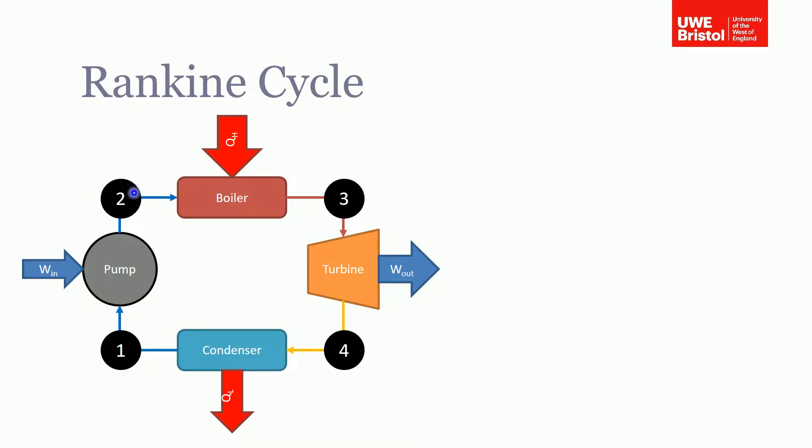That pressurized water then goes into a boiler where we add heat. As I say, that can come from a variety of sources: gas, coal, etc. And obviously we heat that water until it turns into steam at point 3. That steam could be just saturated steam or superheated steam, and again we're going to talk about that later on.